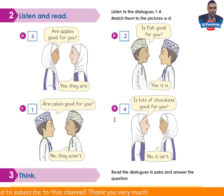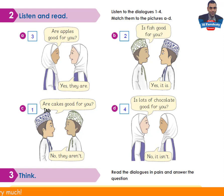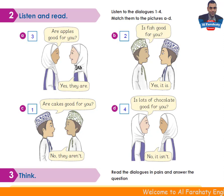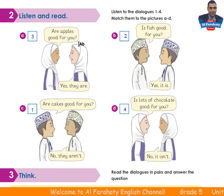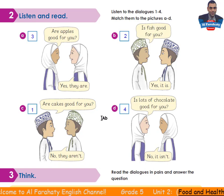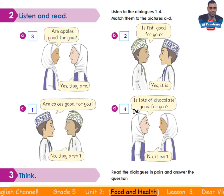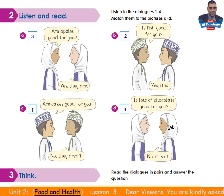We will listen again to these dialogues to check our answers. Dialogue 1: Are cakes good for you? No, they aren't. Dialogue 2: Is fish good for you? Yes, it is. Dialogue 3: Are apples good for you? Yes, they are. Dialogue 4: Is lots of chocolate good for you? No, it isn't. Thank you. Now let's go to Activity 3.